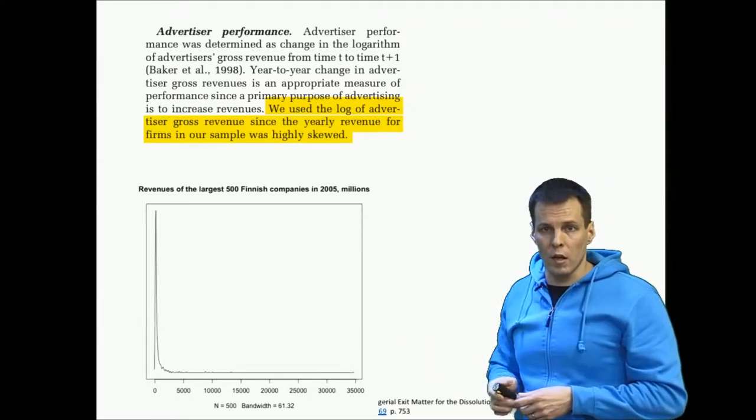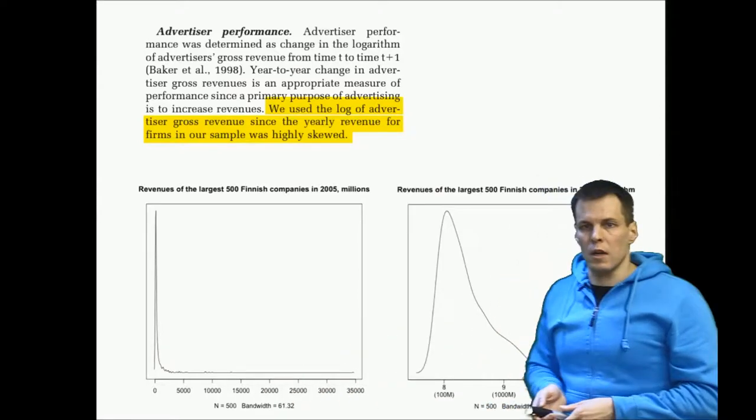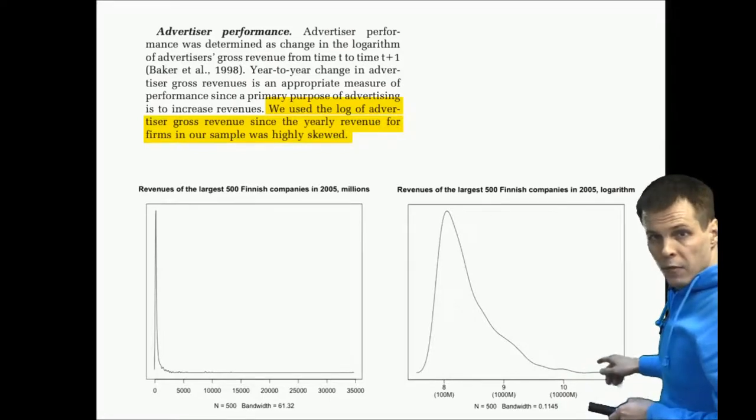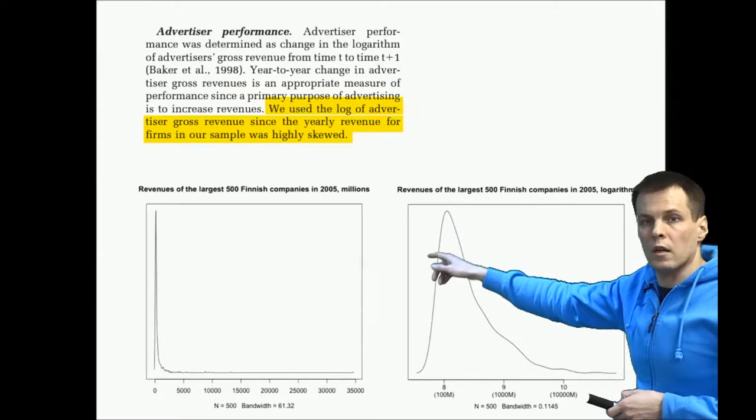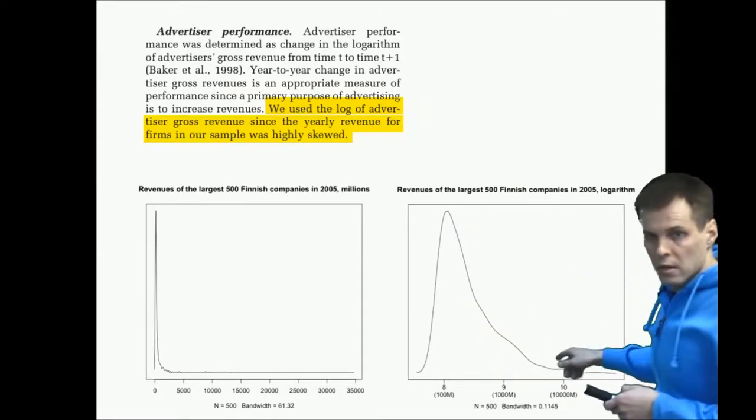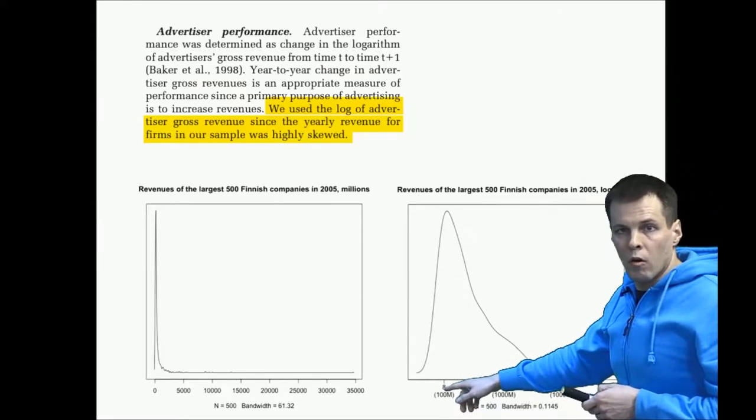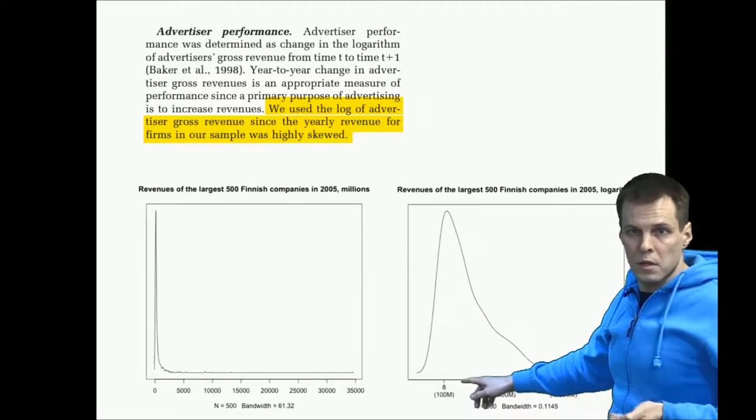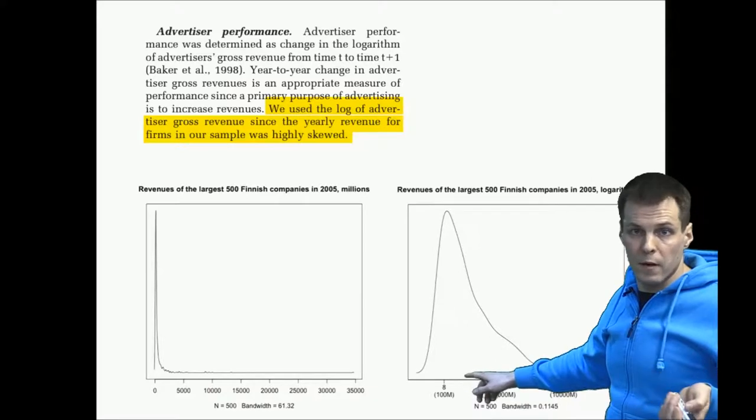If we take a logarithm of these every revenue here, we get the distribution that looks like that. So we get something that doesn't have as long tail as before. So now the observations are more closely clustered around the mean. There is still some tail here, but not as severe. So these units here are now logarithms. I'm using the base 10 here for ease of exposition, but normally we use the natural logarithm. It doesn't really make a difference for your analysis.